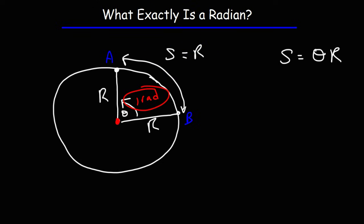So that's where we get it. You could draw any circle. If you take the measurement of the radius of the circle and you draw these two radii such that the arc length is equal to the radius of the circle, you're going to get an angle of approximately 57.3 degrees, or one radian.